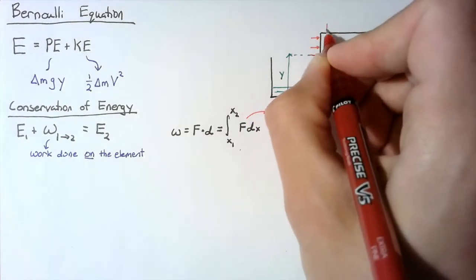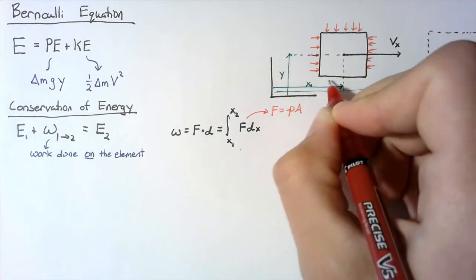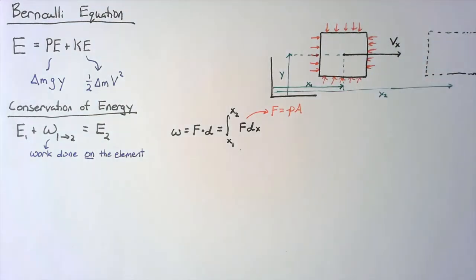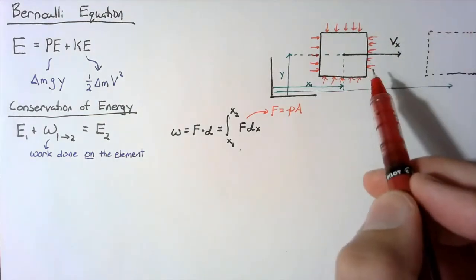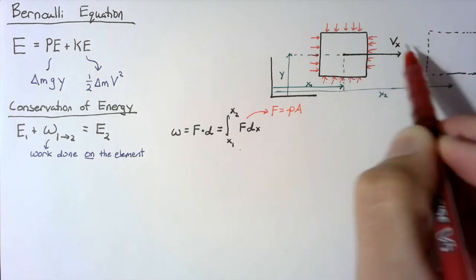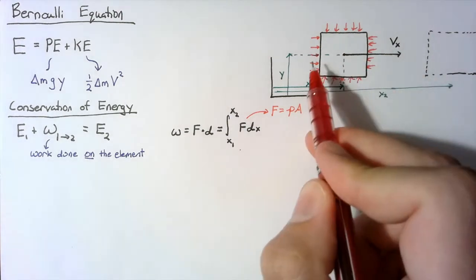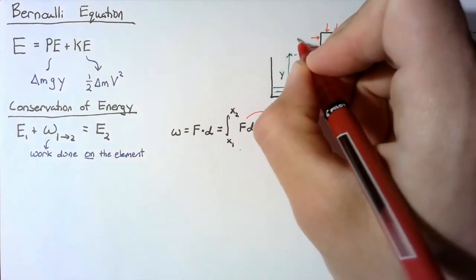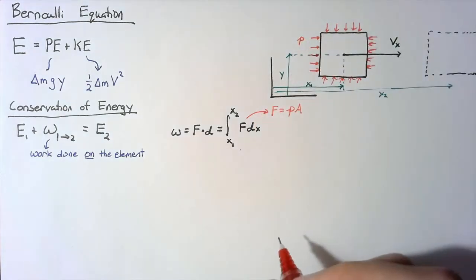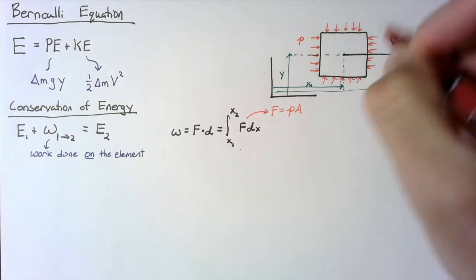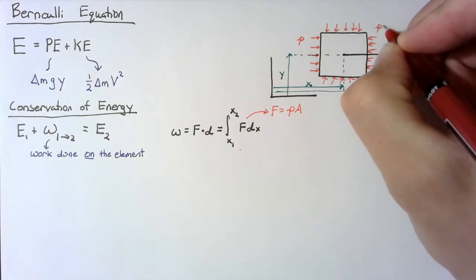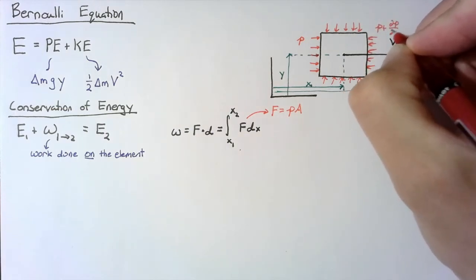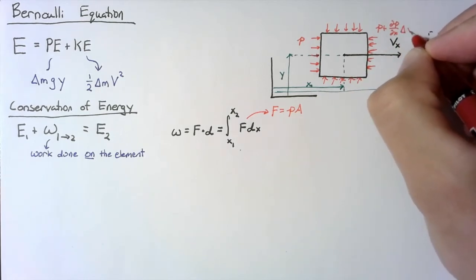We're going to think about pressure acting on each of these surfaces, though because we're only interested in the force in the direction of motion, we're really only going to track the pressures on the left and right hand sides. The pressure on the left side is going to be p, while the pressure on the right side is going to be p plus dp dx times this delta x.